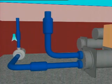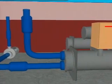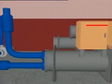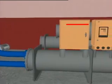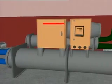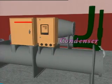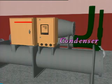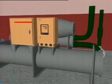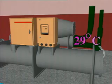The heat transferred to the refrigerant will be passed to the condenser water circulating through the condenser. After absorbing heat from the refrigerant, the condenser water temperature will be raised from about 29 degrees Celsius to 34 degrees Celsius.